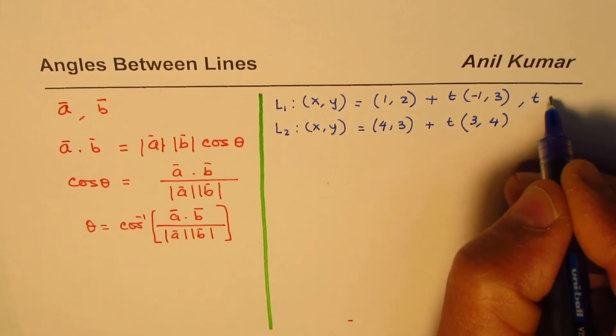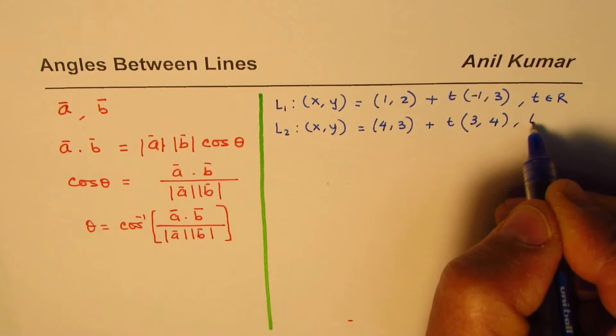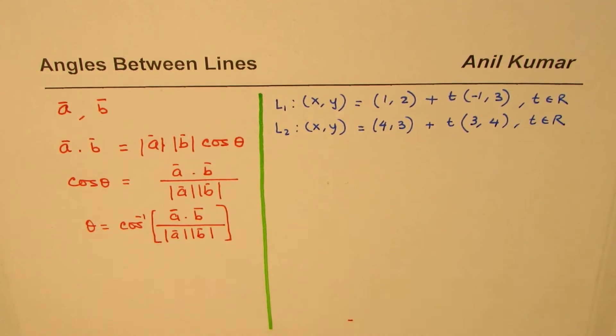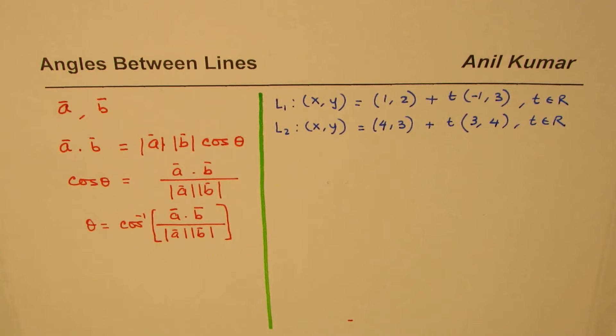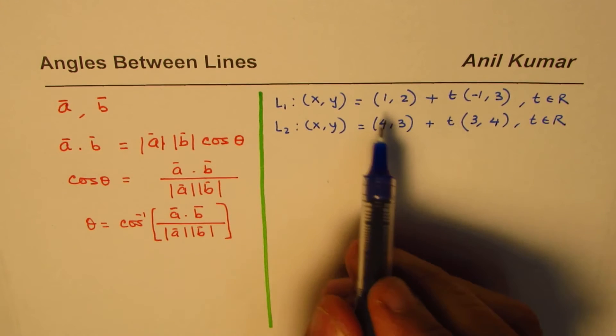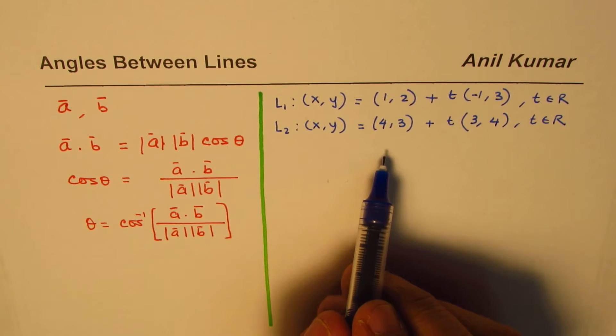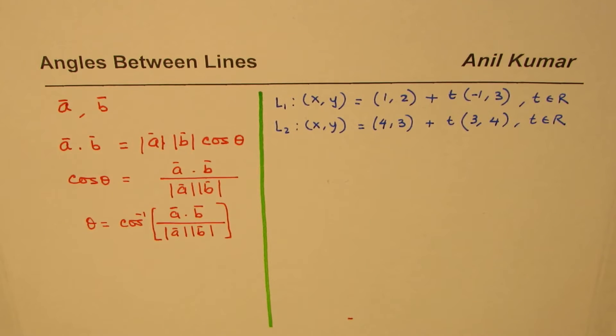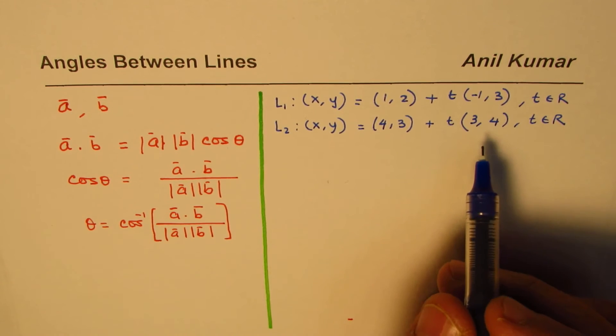Where of course t belongs to real numbers. In this example we're considering lines in vector form. We'll take up more examples where we take lines in different forms, like the scalar equation, Cartesian, or parametric form.